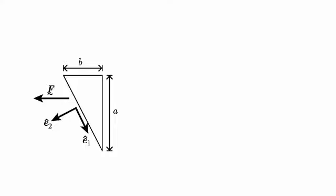Here's another vector decomposition problem. I have a horizontal vector f and I want to split it into components along the ê₁ and ê₂ directions, and they're arranged like so.